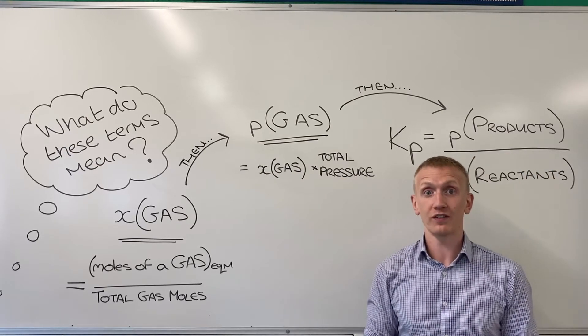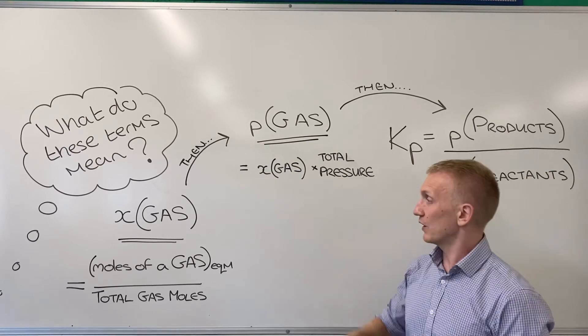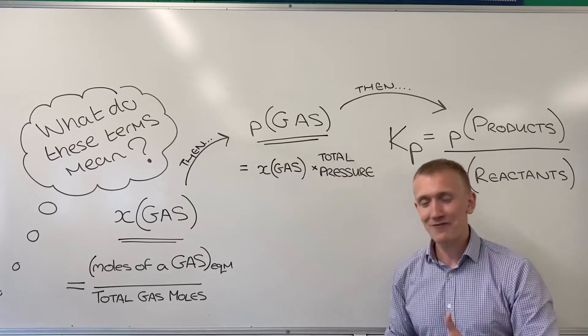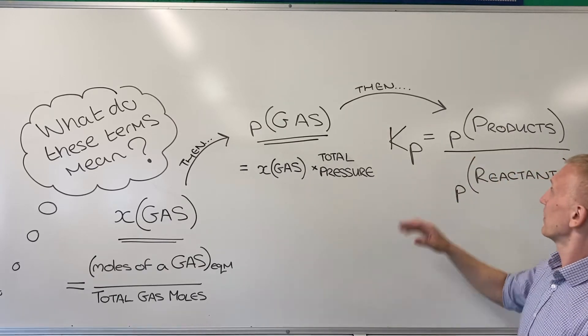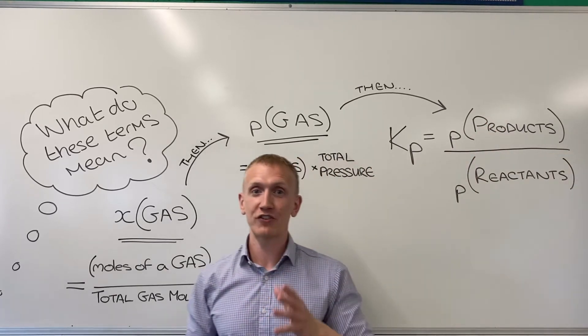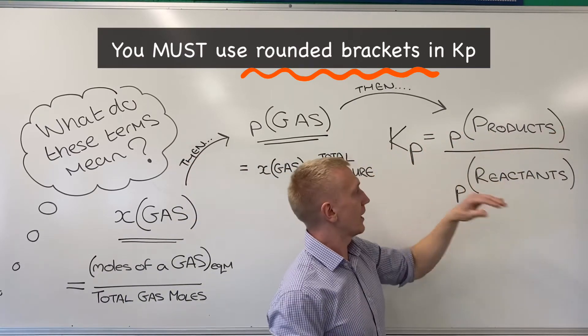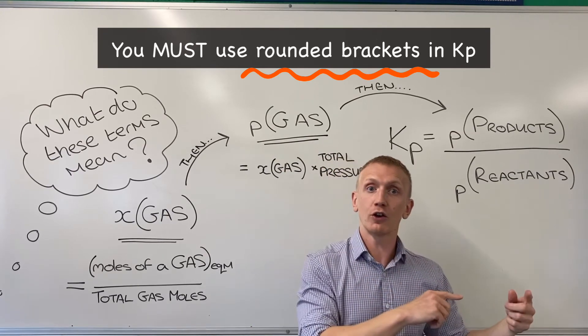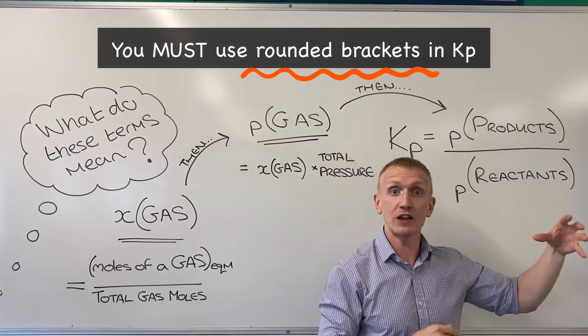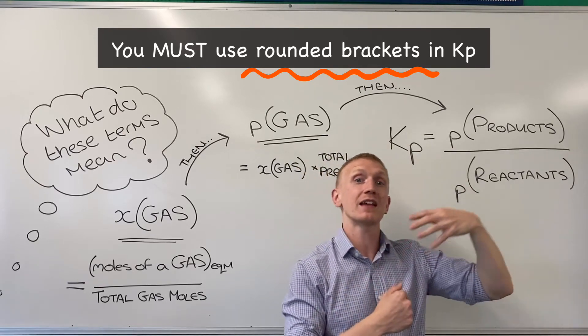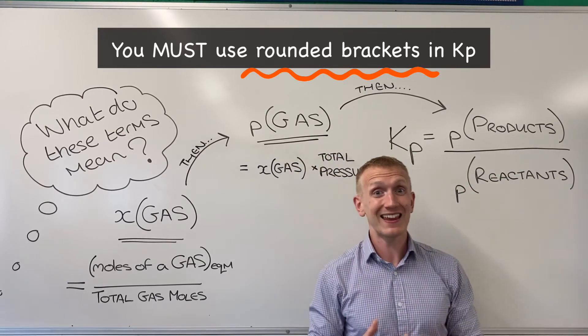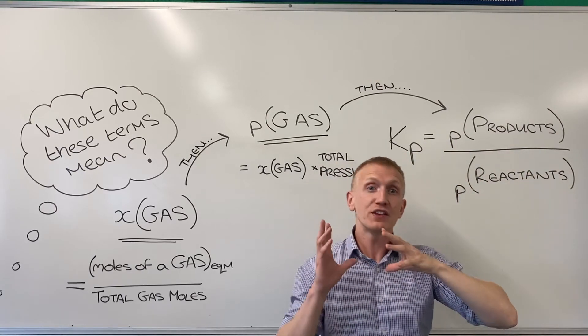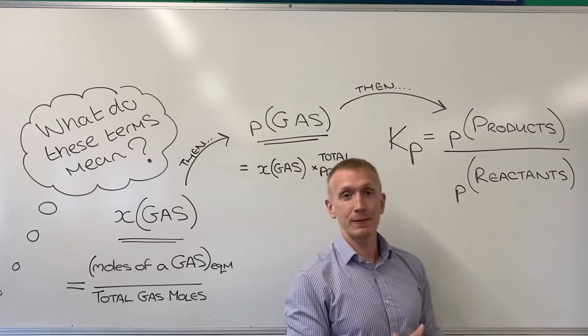So you've done your mole fraction for every gaseous component of your equilibrium, you've then done the partial pressure for every gaseous component of equilibrium, you then need to do your Kp expression setup. It's products over reactants. Make sure that all your coefficients like 2CO2, that means you need p of CO2 squared. So you still use those coefficients, they become the powers. It's just like Kc where everything's multiplied across the top, everything's multiplied across the bottom, and then you just put your numbers in and you'll get a Kp value.